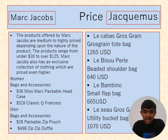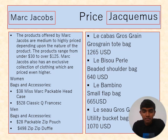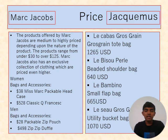For Jacquemus pricing, the Le Cabas Bro Grain tote bag is $1,265 — which is very high compared to Marc Jacobs. The La Buston Purley belted shoulder bag is $640, the Le Bambino small bag is $665, and the Le Gros Grain utility bucket bag is $1,070.